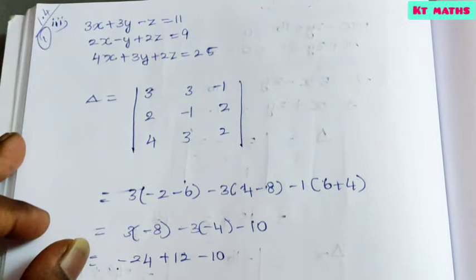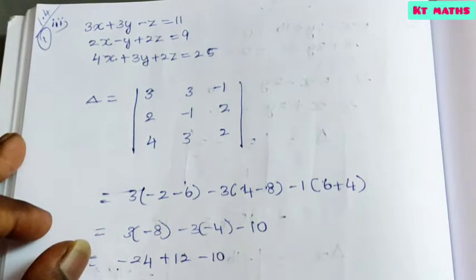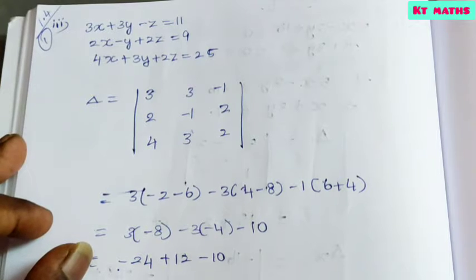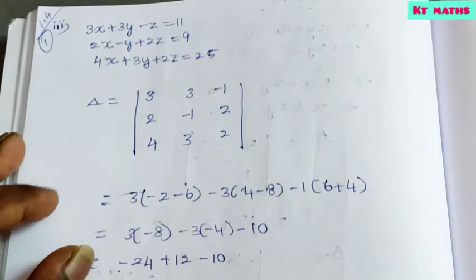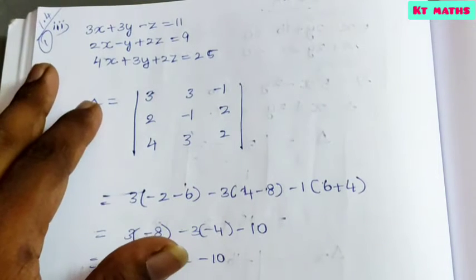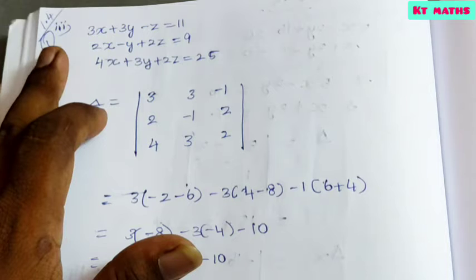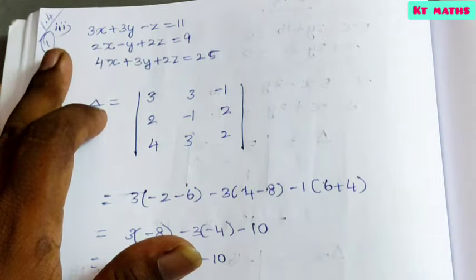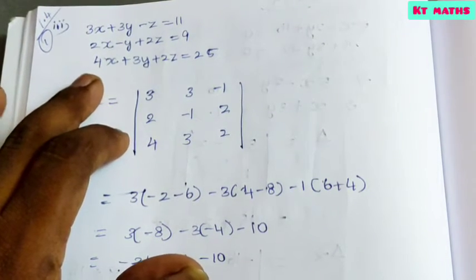Hello students. This is a 12th standard mathematics chapter 1 Cramer's rule introduction video. Next, exercise 1.4, first part, third sum — how to solve a linear equation in three variables.